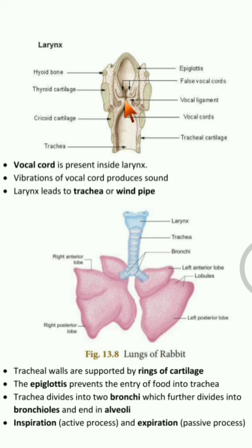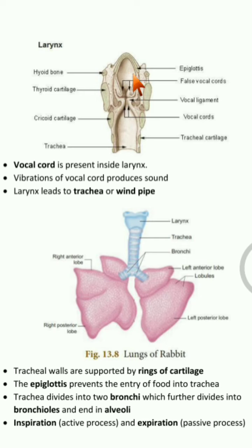The vocal cords produce sound through vibrations. The vocal cord is guarded by four cartilages — cartilages are soft bones, similar to those found at the tip of your nose and in your ears. These four cartilages protect the vocal cord, and the vocal cord is involved in the mechanism of producing sound.